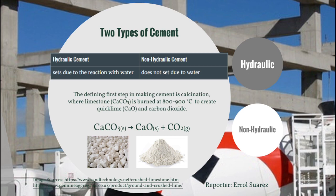In calcination, limestone (CaCO3) is burned at 800 to 900 degrees Celsius to produce quicklime (CaO) and CO2. In production, calcium carbonate does not appear as rock but is instead crushed into a fine white powder. In fact, most of the calcium-based compounds in cement production are in the form of a white powdery substance.